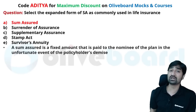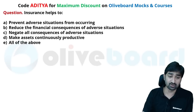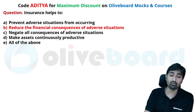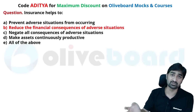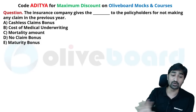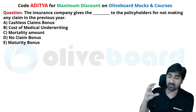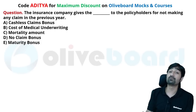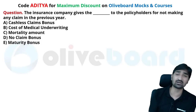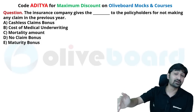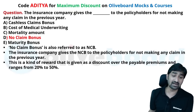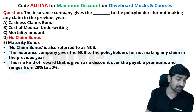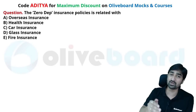S.A. or sum assured is the term commonly used in insurance — it refers to the maximum amount covered. Insurance helps reduce the financial consequences of adverse situations — it is made to recover losses, not to make profit. If a policyholder does not make any claim in the last year on an existing policy, the insurance company gives a discount of 20 to 50% on the new policy renewal. That is called a no claim bonus.